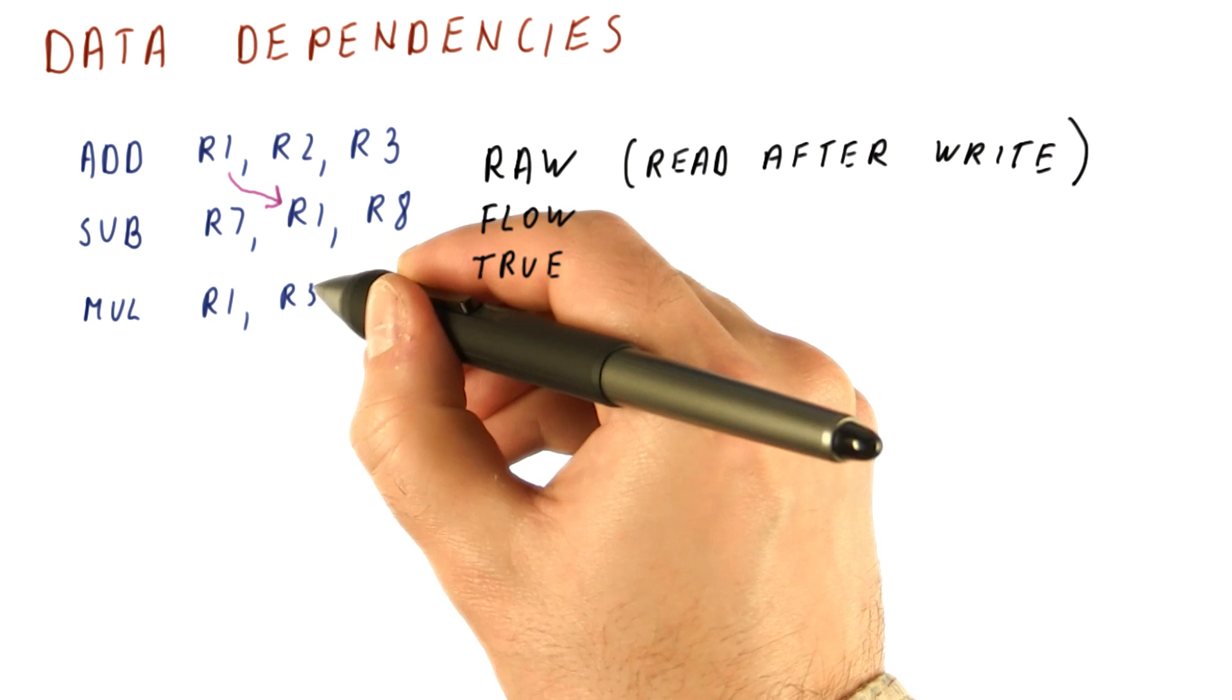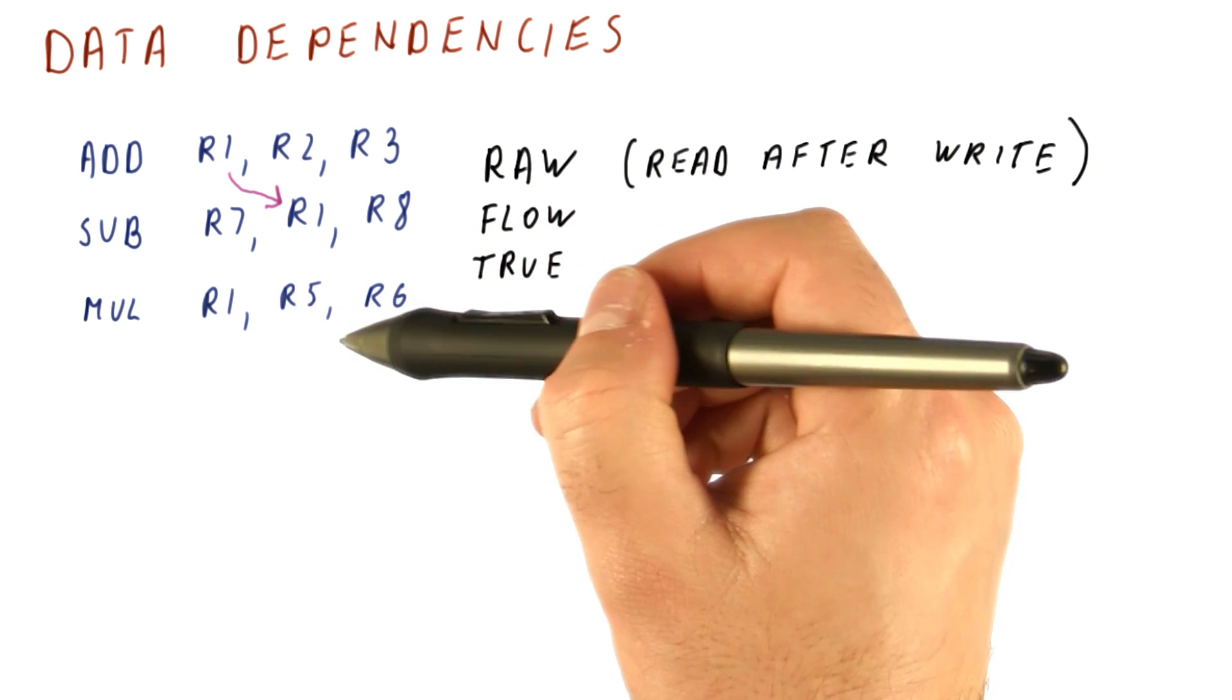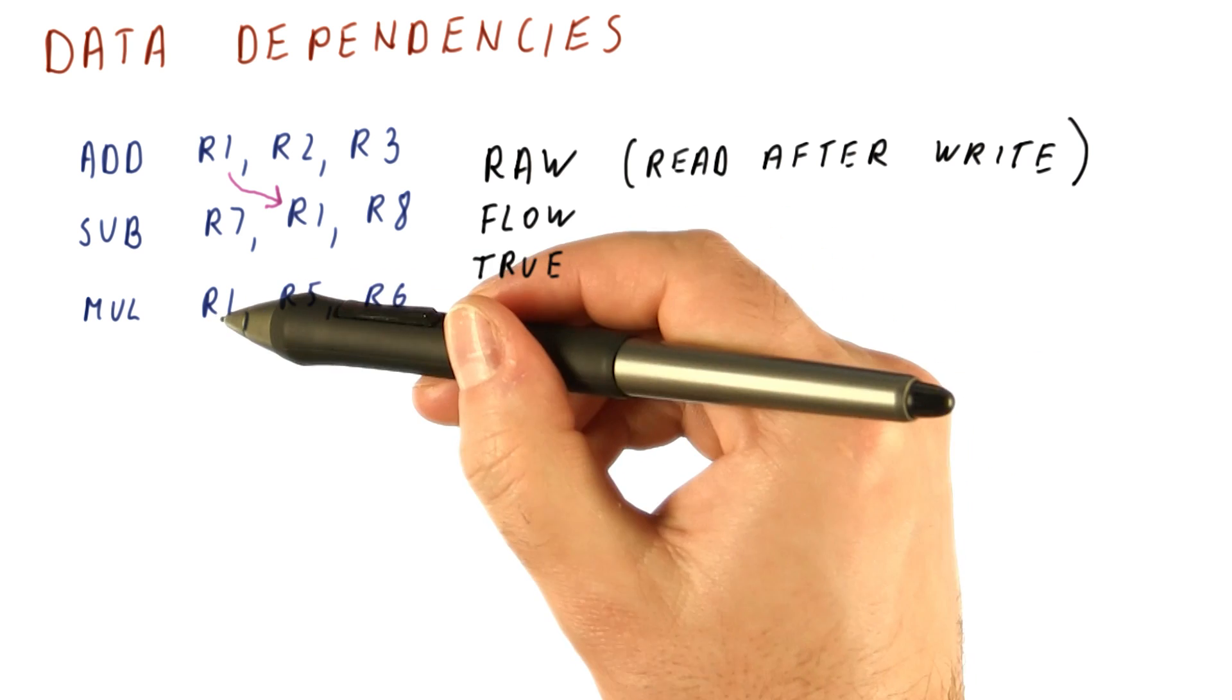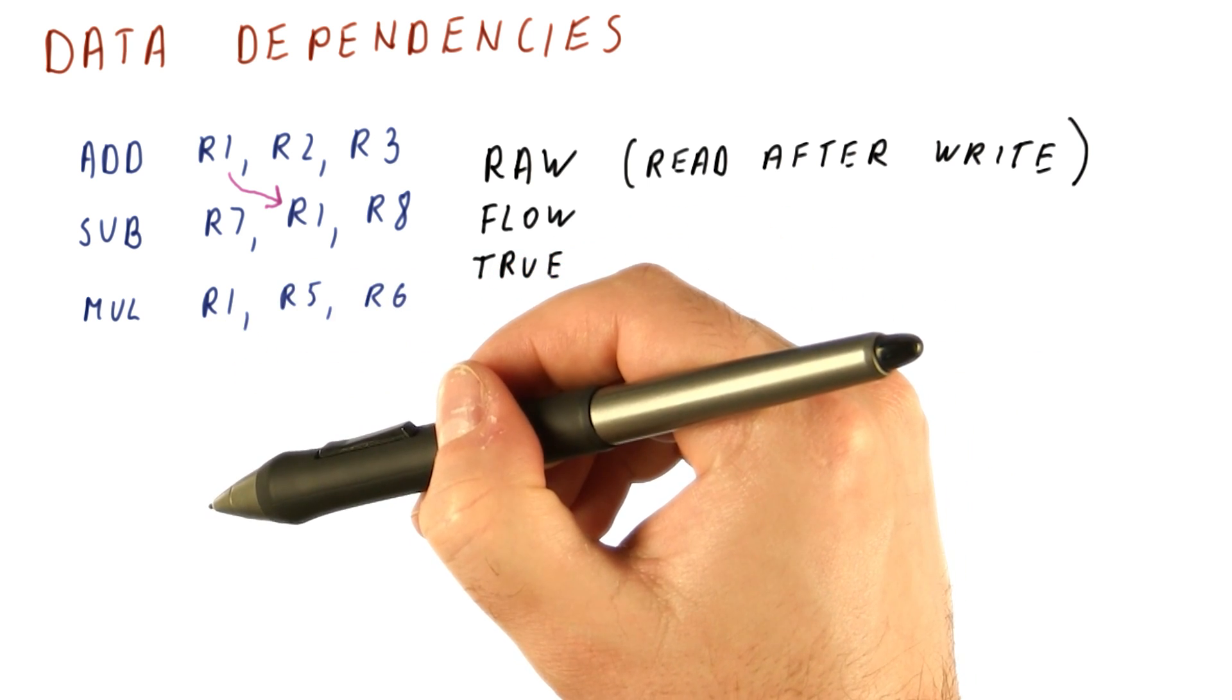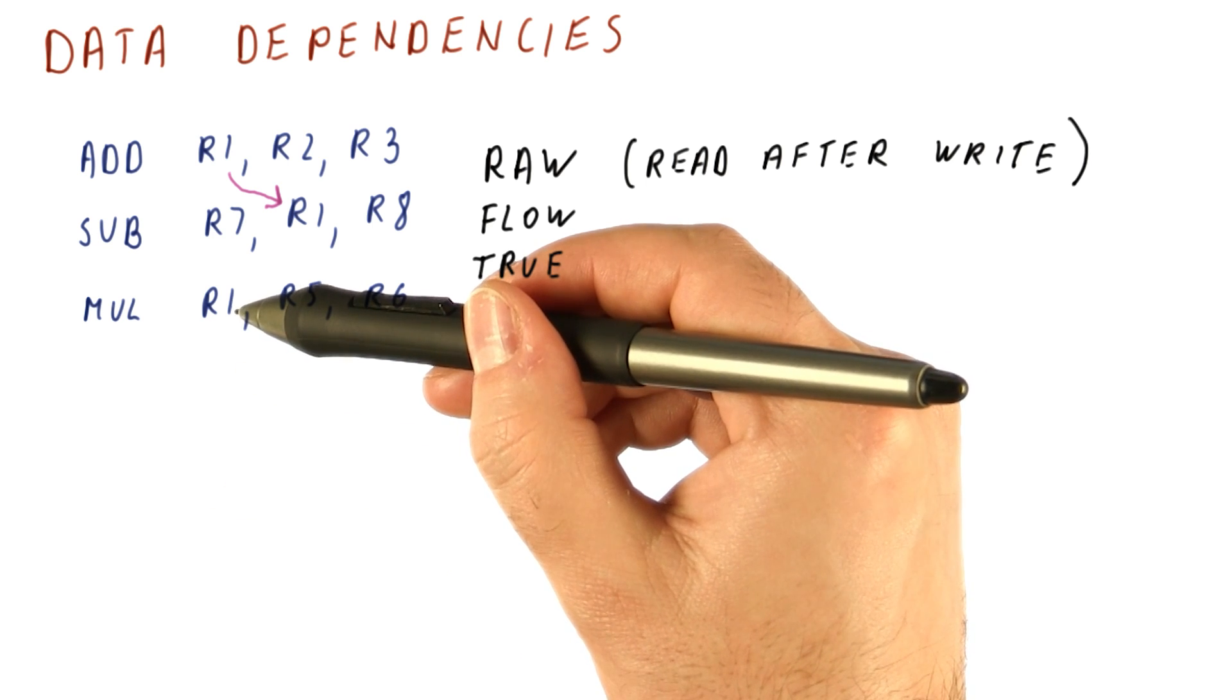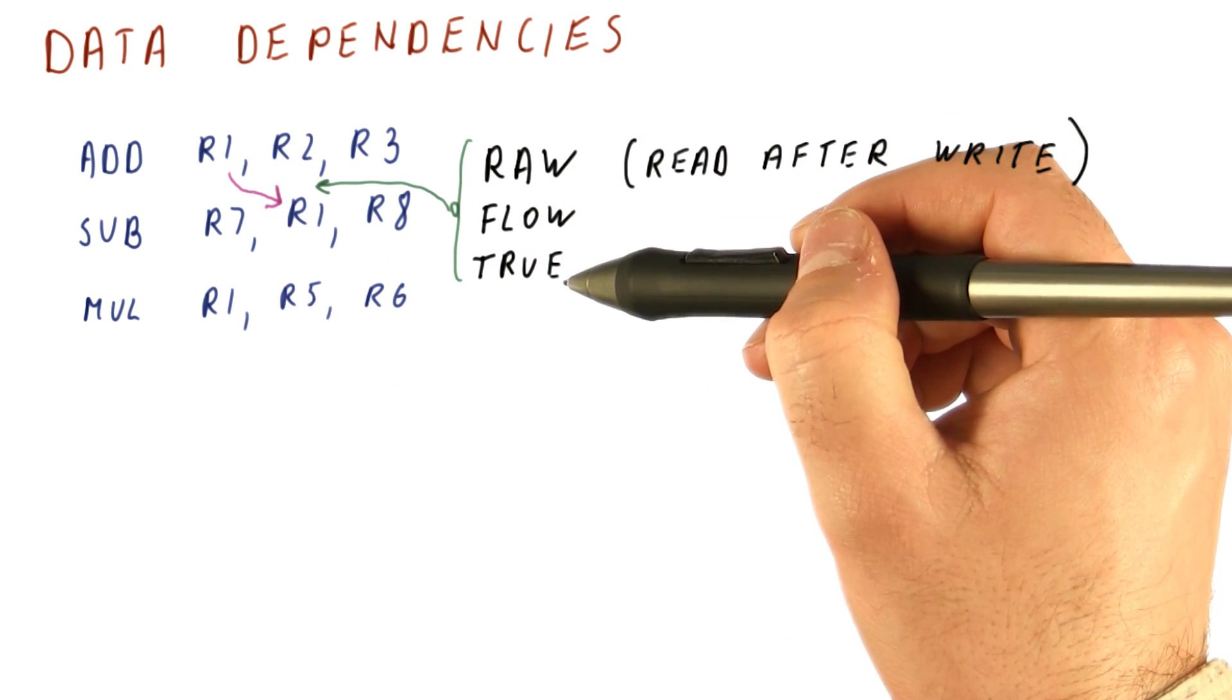There are two other types of data dependencies. Let's say that there is later a multiply instruction that takes R5 and R6 and produces R1 so that later instructions will use that R1 as the result of the multiplication. So for this dependence, we say that's a RAW flow or true dependence.